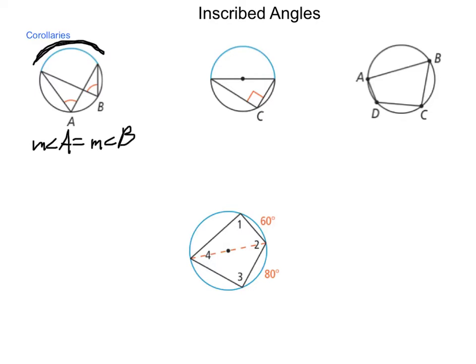Next, the second corollary is that an angle inscribed in a semicircle is a right angle. As you can see, angle C here intercepts this diameter, which means that it's half of the circle, 180 degrees.